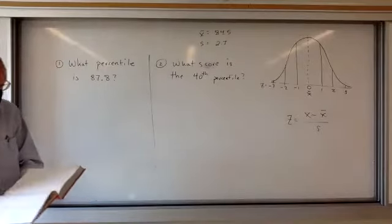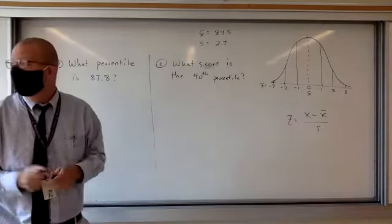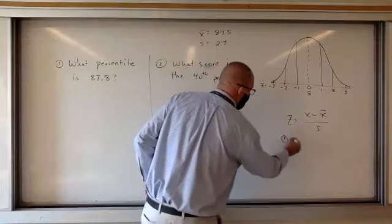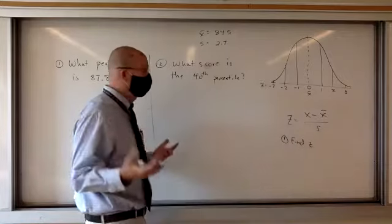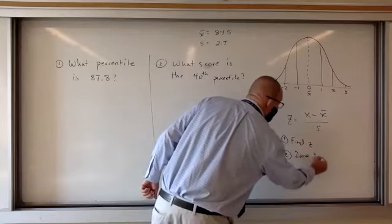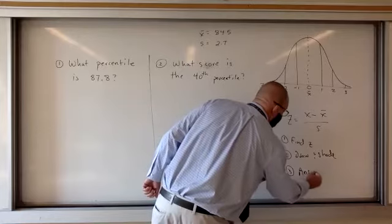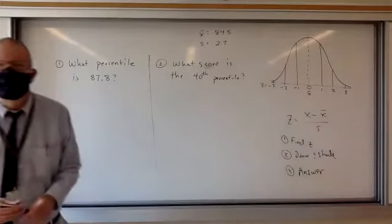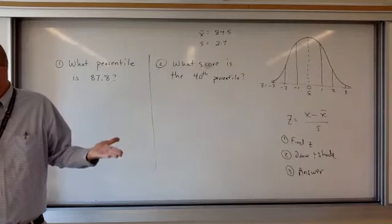All right. Well, the first thing we're going to do in each of these, it's a three-step problem. Okay. Three steps for all these problems. One. Find your Z. Now, in this case, yeah, same thing. Find your Z. Two. Draw and shade. Three. Answer the question. That's it. Three steps. Can we do it? Yes.